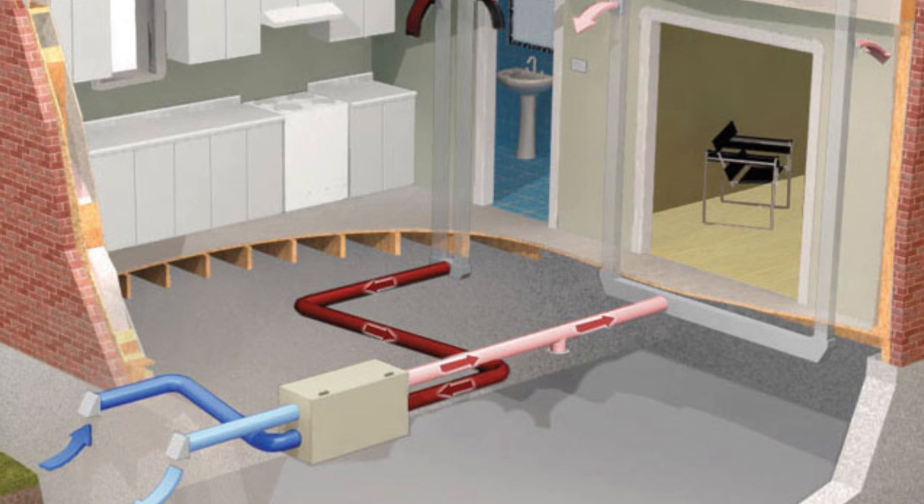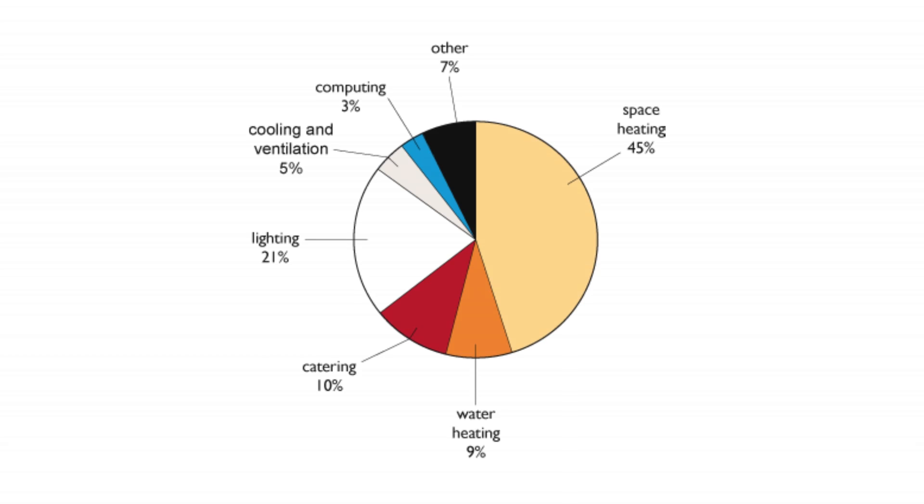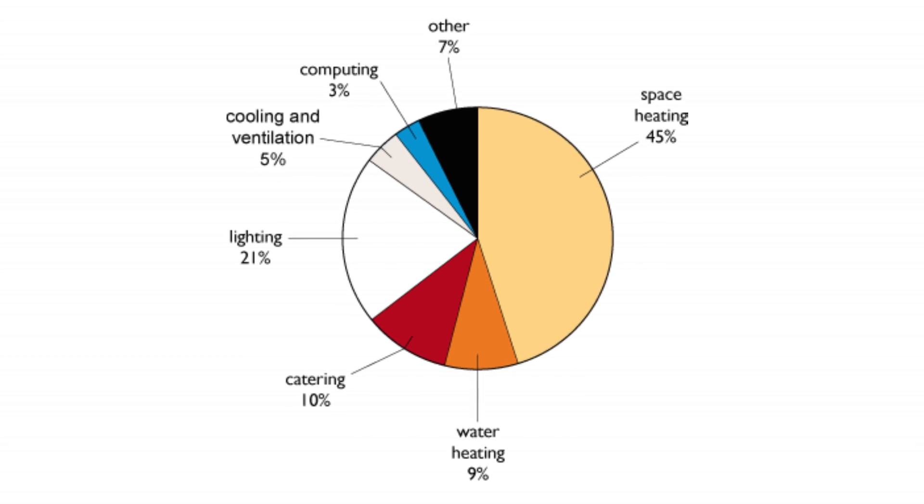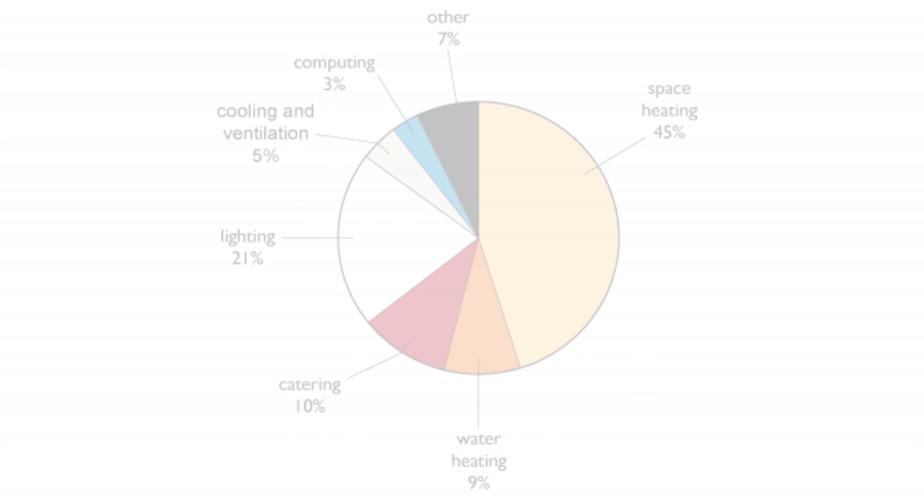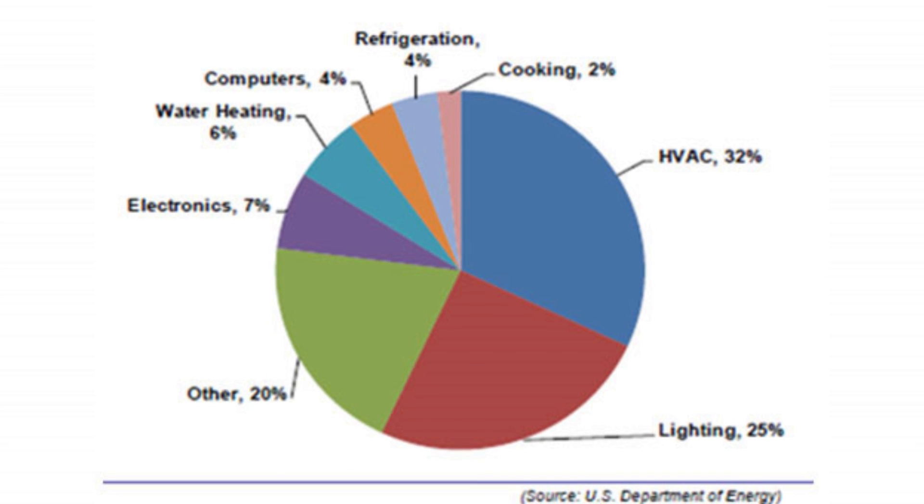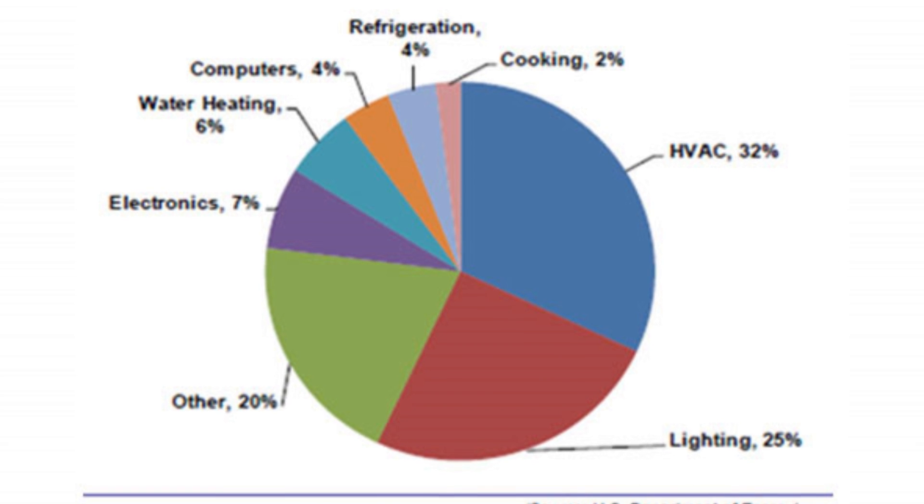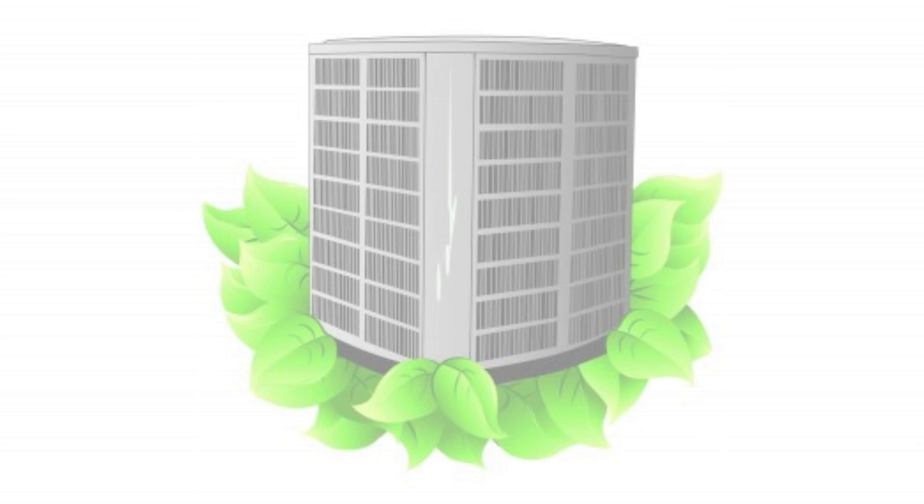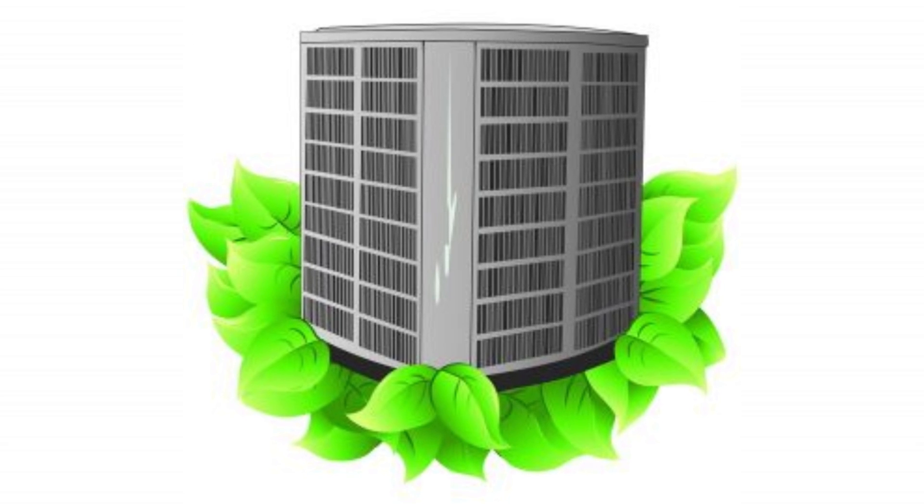It should be noted that in the UK, 57% of the energy used in the domestic sector is used in space heating. In fact, heating, ventilation, and air conditioning accounts for a significant portion of the global energy use. Air conditioning has been identified as the key area to focus for reducing energy use and carbon emissions.